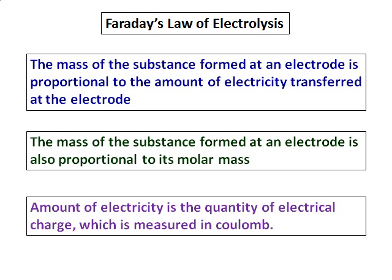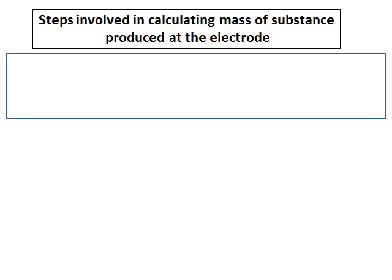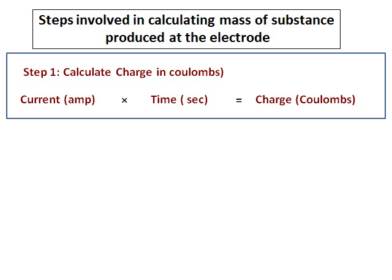Now let's see how we translate this into numerical problems. The steps involved in calculating the mass of a substance produced at the electrode based on Faraday's law: Step 1 is to calculate the charge in coulombs. The charge in coulombs is calculated by multiplying the current in amperes by the time in seconds. Note: current should be in amperes and time should be in seconds, and their product gives charge in coulombs.